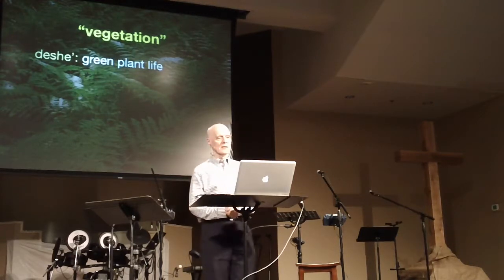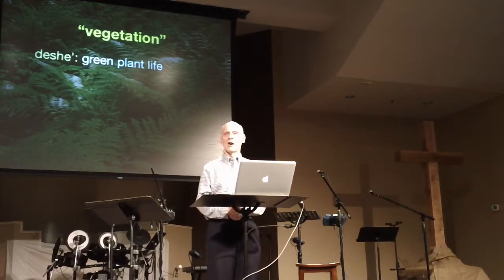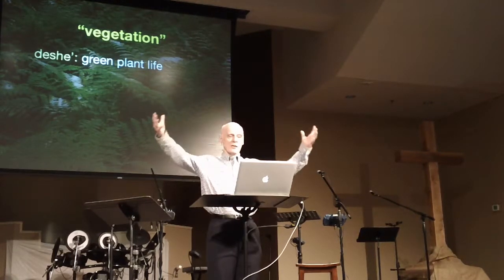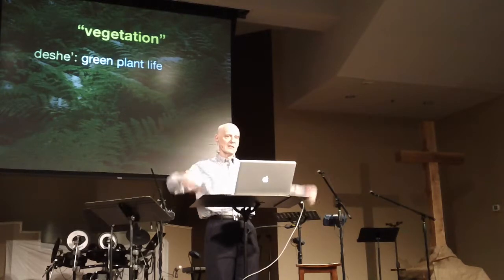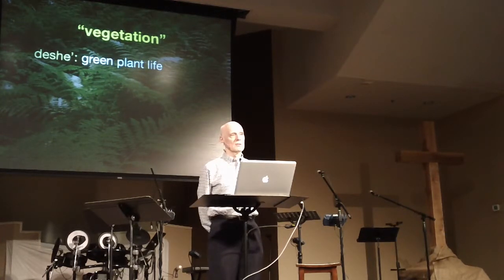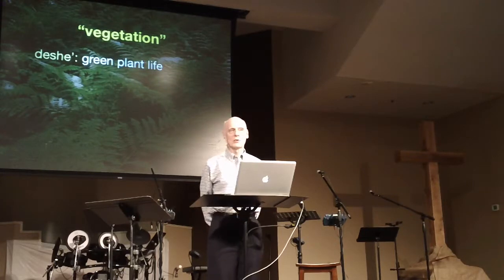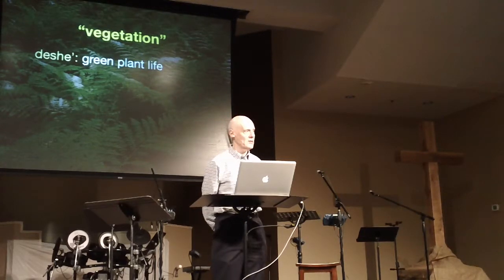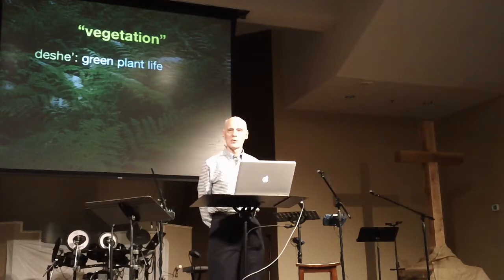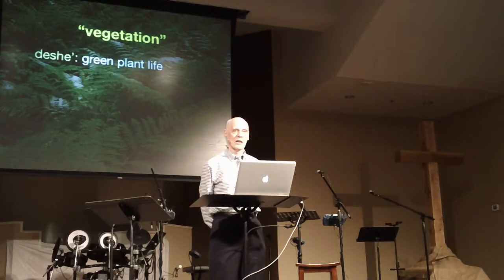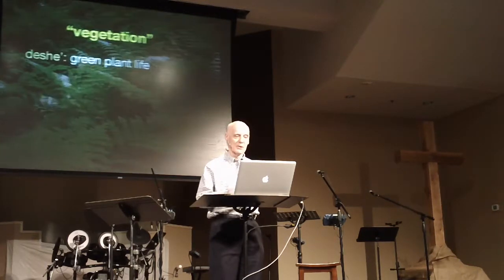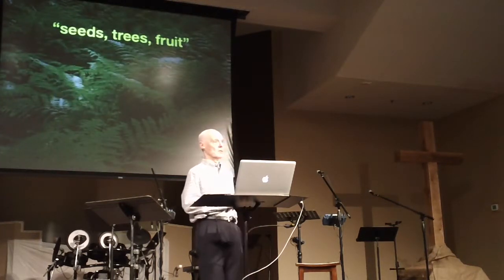Following the description of how the continents will have this deshev, the text gives three examples — and it's important to recognize that it's three examples, not a complete list. The general claim is that God creates this vegetation on the continental land masses, and it gives us three examples: namely the seeds, the trees, and the fruit.